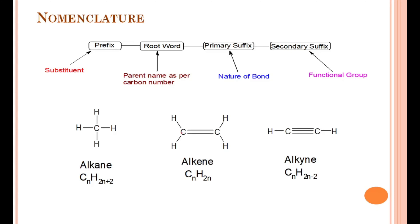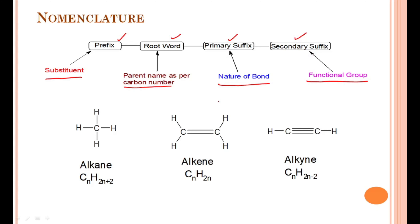Whenever we go for nomenclature of any hydrocarbon, it consists of four parts: prefix, root word, primary suffix, and secondary suffix. The prefix includes the substitution attached to the main chain. The root word is the parent name of that hydrocarbon, which depends on the number of carbons present in the chain. The primary suffix includes the nature of the bond — whether it is single, double, or triple bonded. The secondary suffix denotes the functional group, if any is attached.